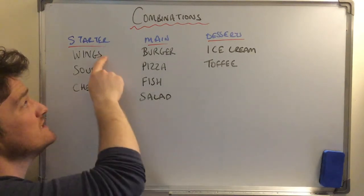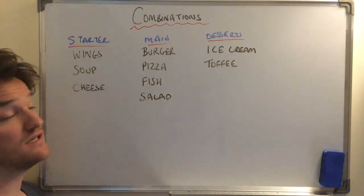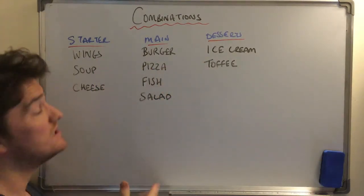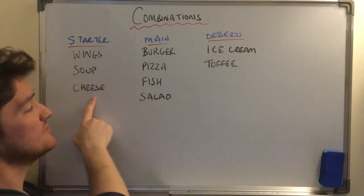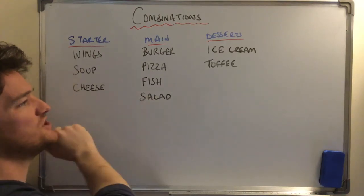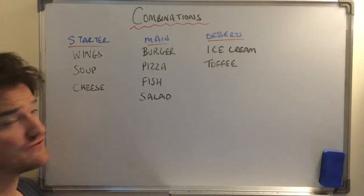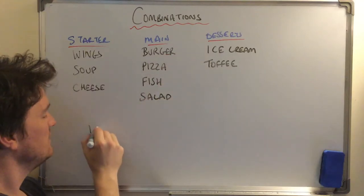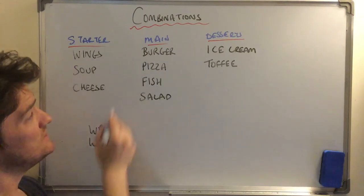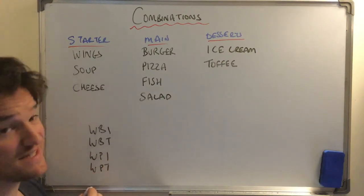You could go in and order wings and a burger and ice cream, or wings, burger, and toffee, or wings, pizza, and ice cream, or wings, pizza, and toffee. You keep going — or maybe you don't like wings, so you go for the goat's cheese, fish, and toffee. I'll just use the first letter to list them: WBI, WBT, WPI, WPT.